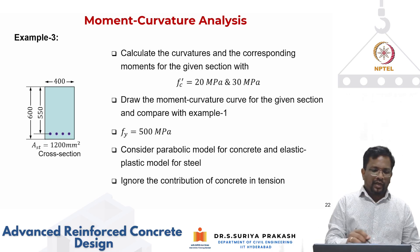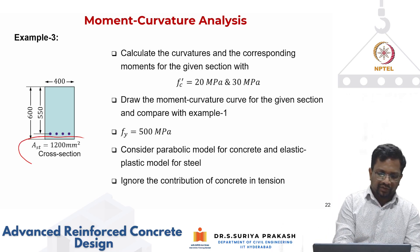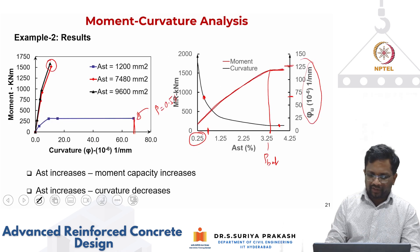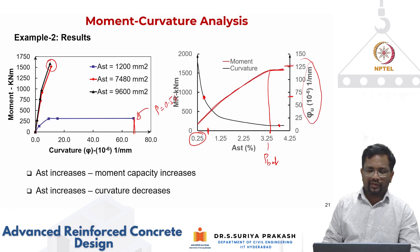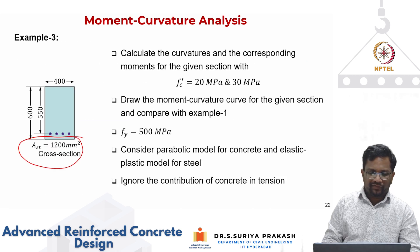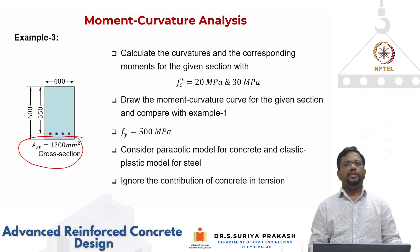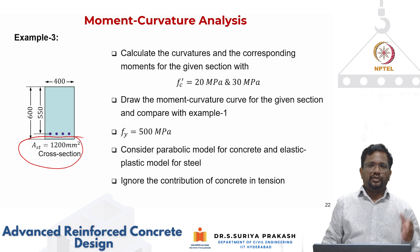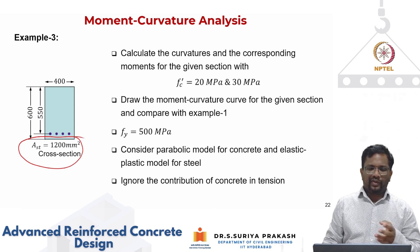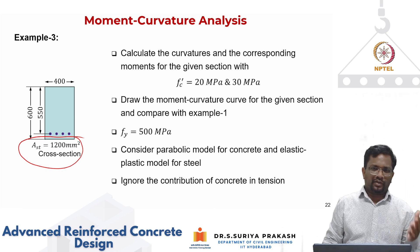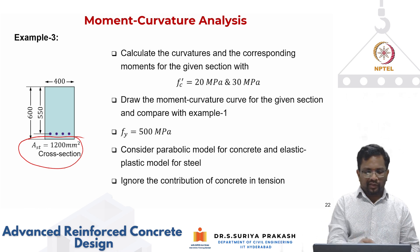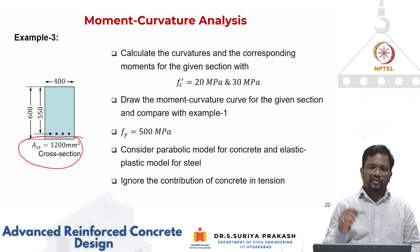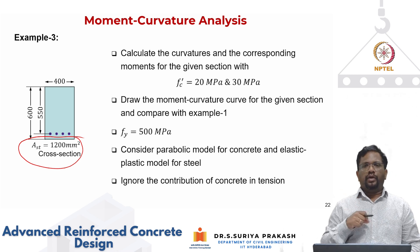Now let us see for a heavily under-reinforced section. In the previous case the balanced reinforcement was about 3.25 percentage. The very first case we considered was Ast equal to 1200 mm square, which corresponded to about half a percentage of the cross-sectional area — 1200 divided by 400 into 600 multiplied by 100 gave half a percentage. That is the amount of steel put for such a very low reinforcement ratio.